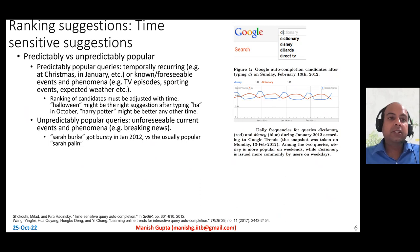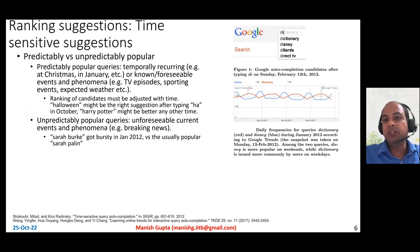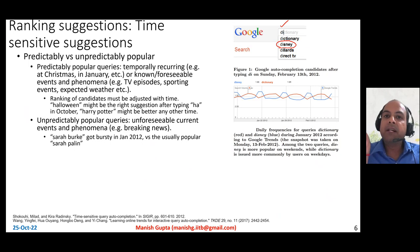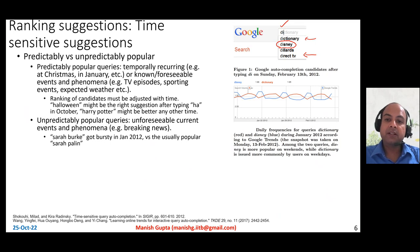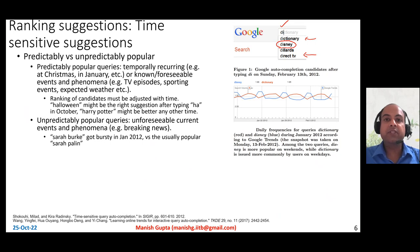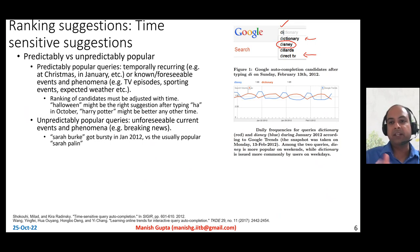Time sensitivity is a very important thing. On weekends it might be good to show 'Disney' at the top if the user has typed 'DI' as the prefix, but on weekdays maybe it's better to show other things like 'dictionary' or 'Direct TV' at the top. The popularity of these queries typically follows some periodicity.